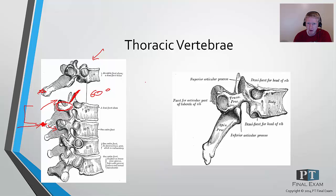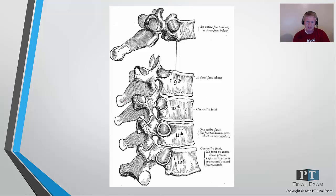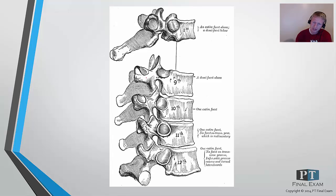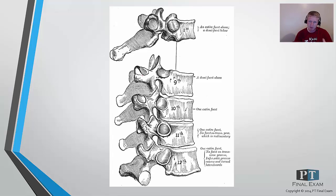Moving on — as a broad rule, side bending and rotation occur in the same direction in both the thoracic spine and the cervical spine. What that means is that as you side bend to the left, you're also getting a little bit of left rotation. As you side bend to the right, you're getting a little bit of right rotation. Side bending and rotation occur as a coupled motion in thoracic and cervical vertebrae.